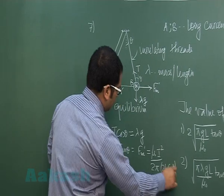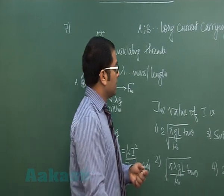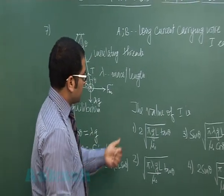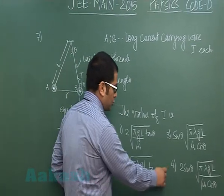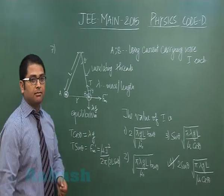Now based on this you can just divide it and you'll get the value of the required parameter the value of current and that comes out to be option number 4. Now we'll move to question number 8.